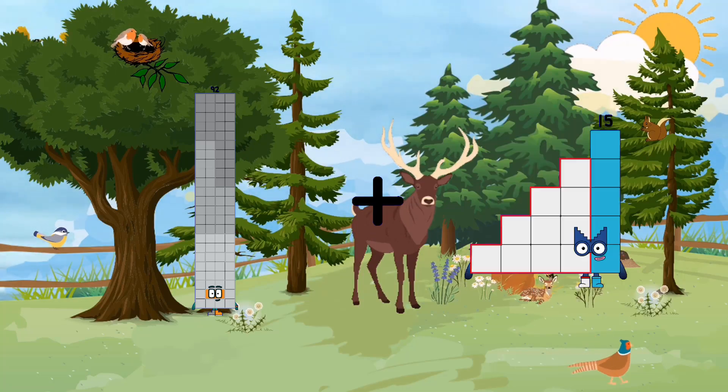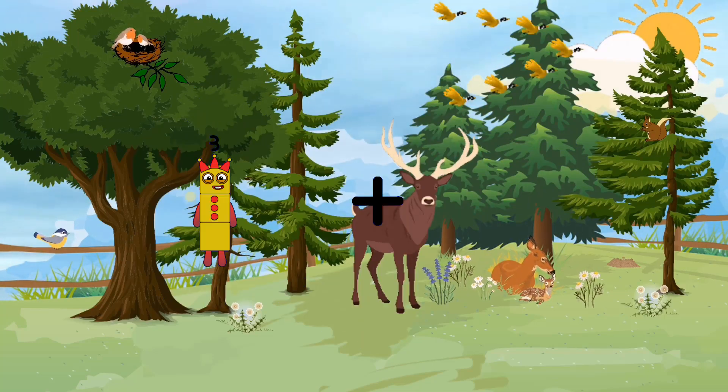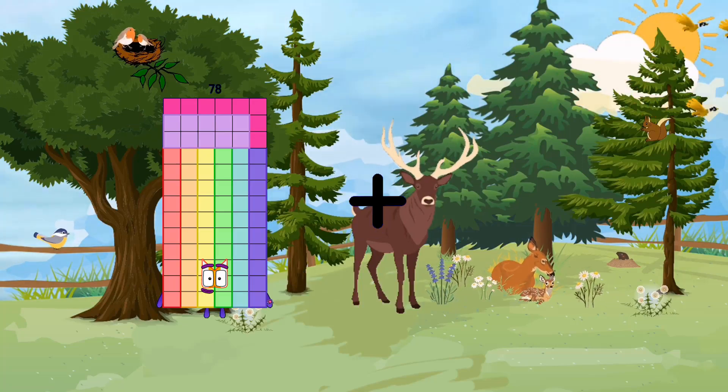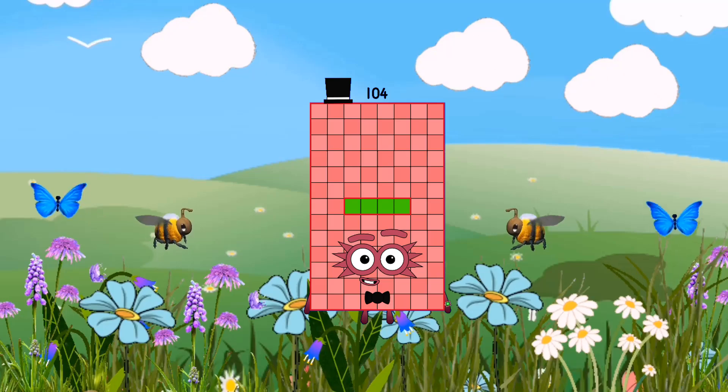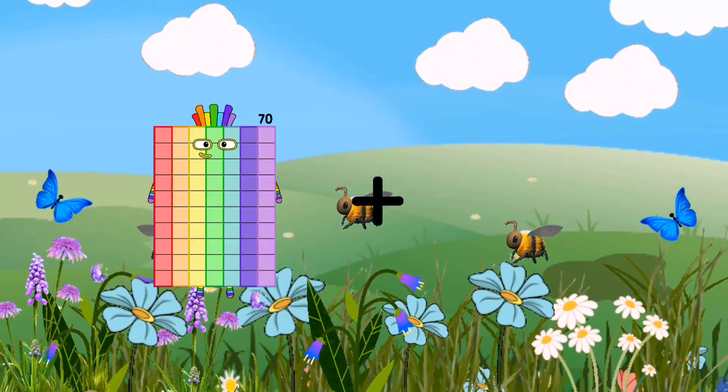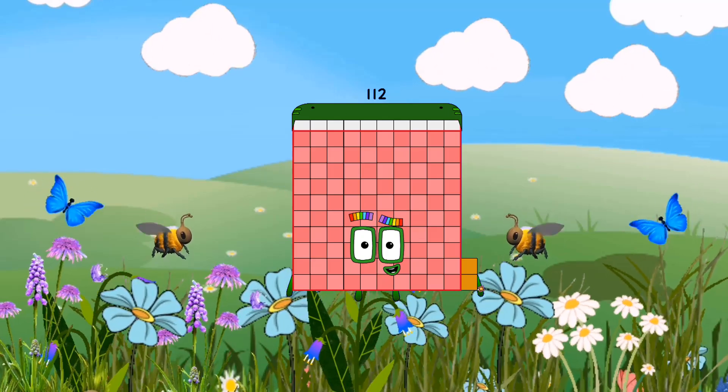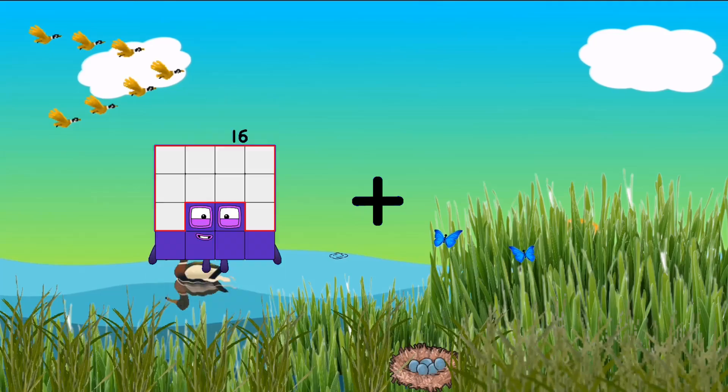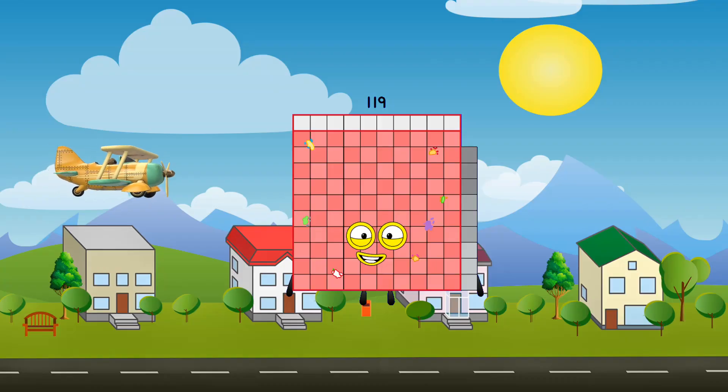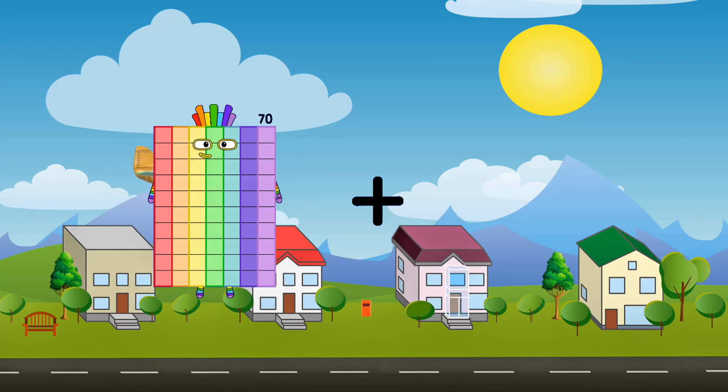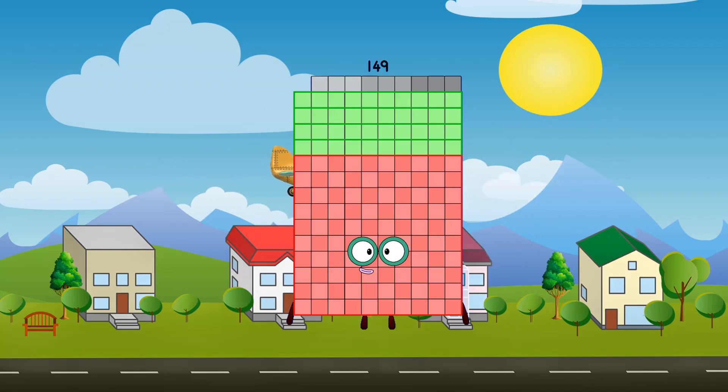92 plus 57 equals 149. 79 plus 26 equals 104. 70 plus 42 equals 112. 39 plus 80 equals 119. 70 plus 79 equals 149.